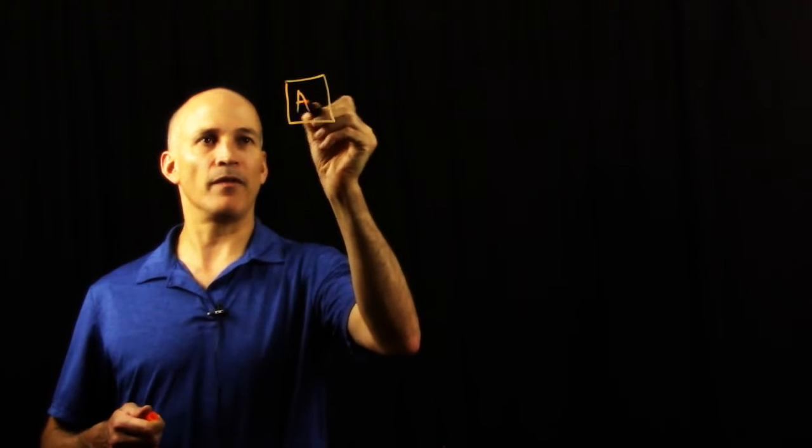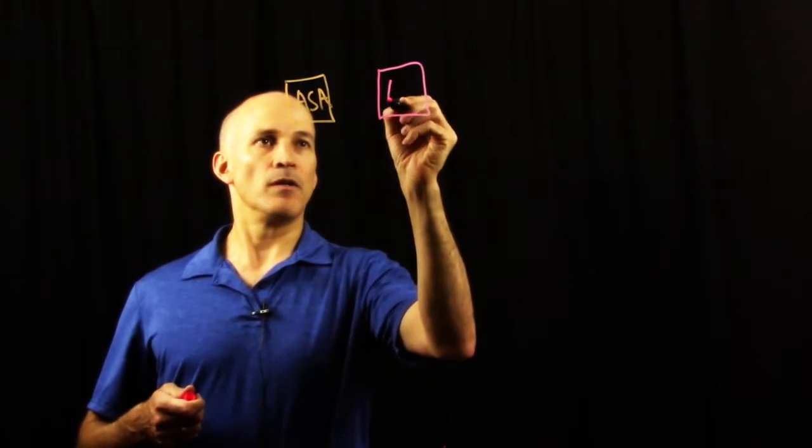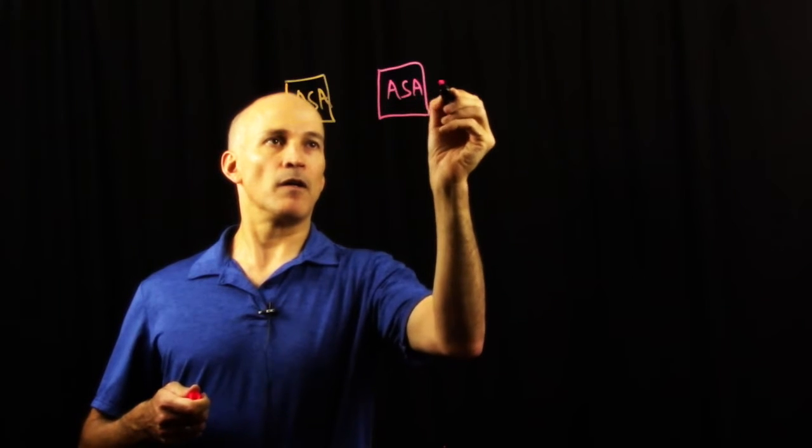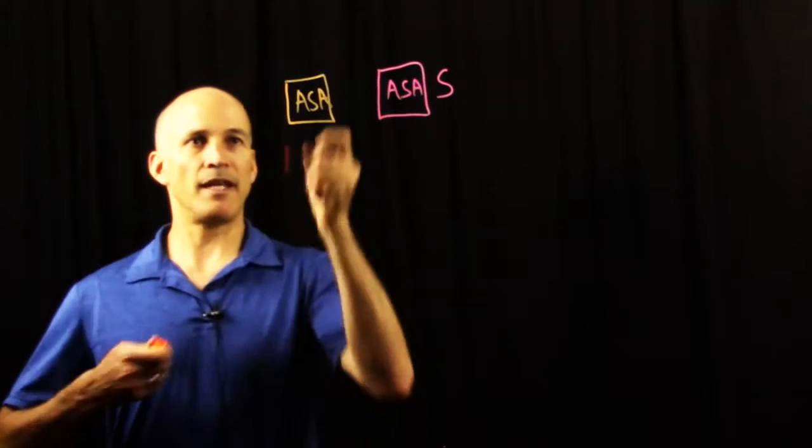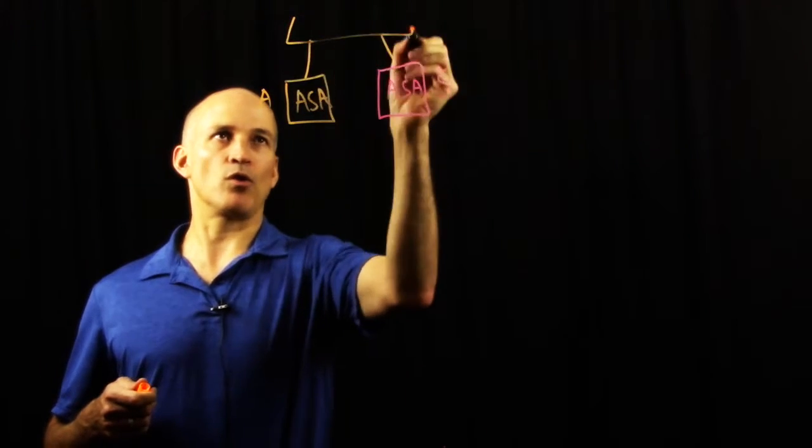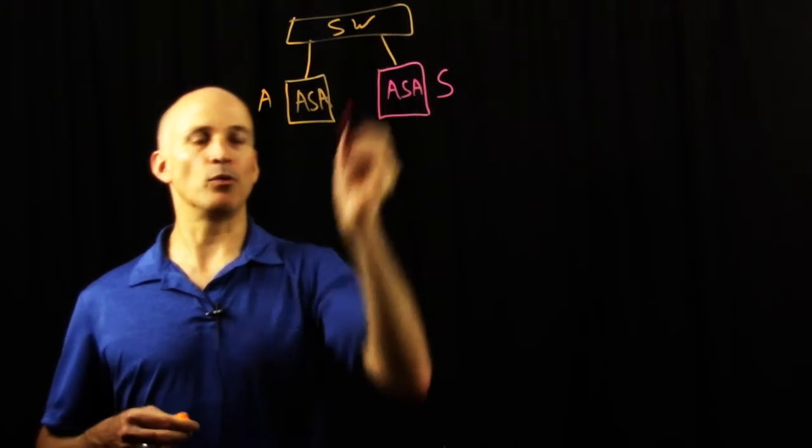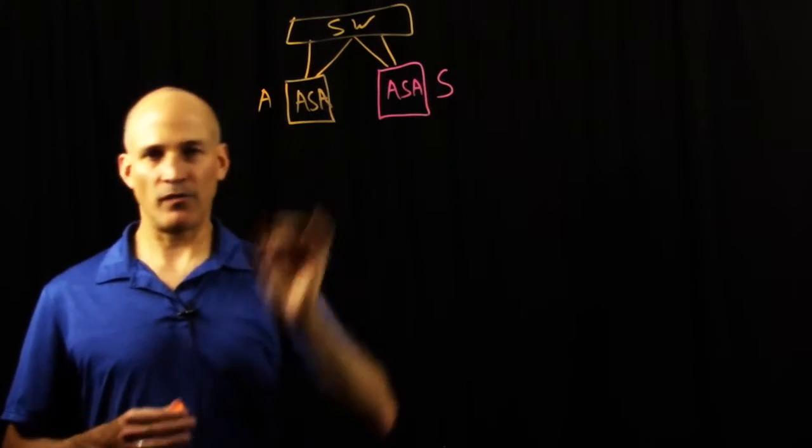The design starts with a pair of active standby ASAs. In this case I'm going to draw them in two different colors. This is the standby device and this is the active device. Each one connects out to a switch or switching environment, probably dual connected to a pair of switches up above. That point is fairly standard.